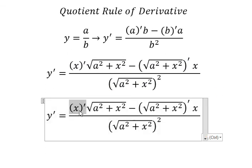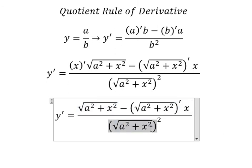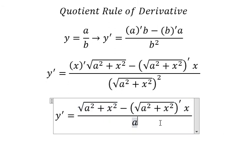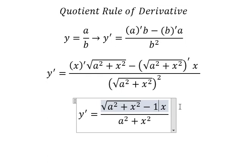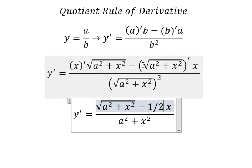So first derivative of x we have number one. This one we have a square plus x square. First derivative of the square root we have one over two with the square root.